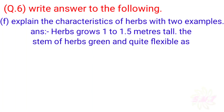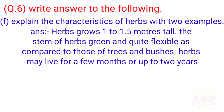F: Explain the characteristics of herbs with two examples. Answer: Herbs grow 1 to 1.5 meters tall. The stems of herbs are green and quite flexible compared to those of trees and bushes. Herbs may live for a few months or up to two years.